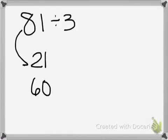I know that 21 and 60, if I add them up, they are going to equal 81. Okay, I also have to make sure that each of them can be divided by 3 without any remainder.